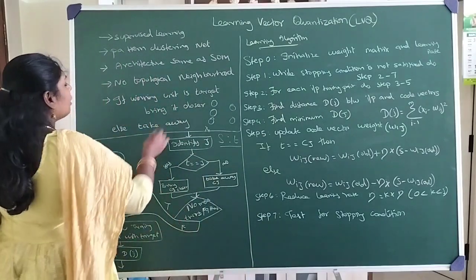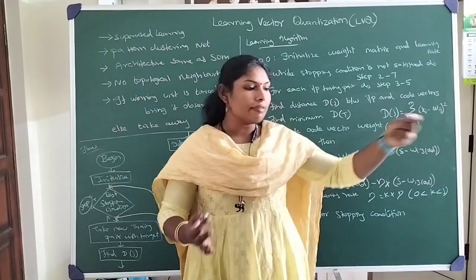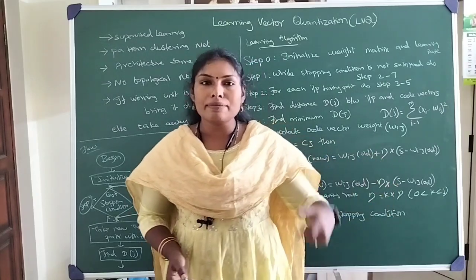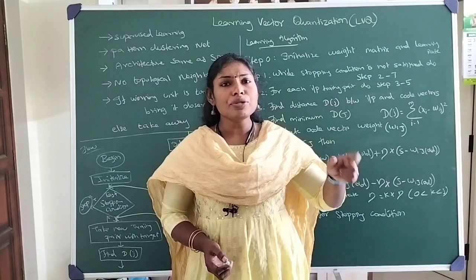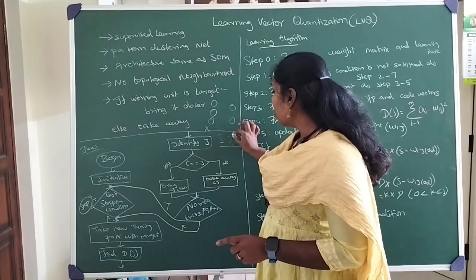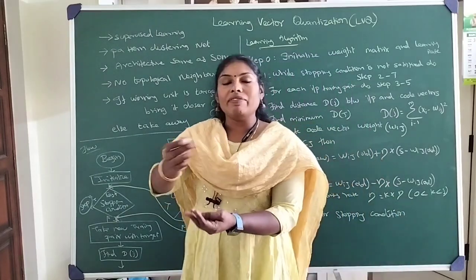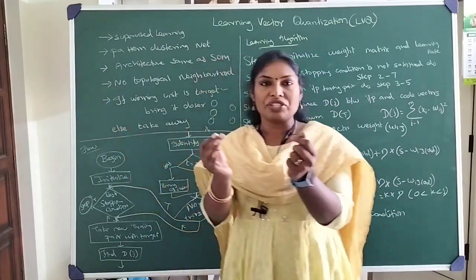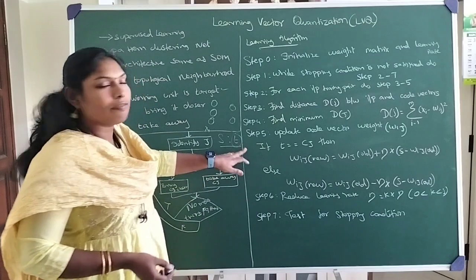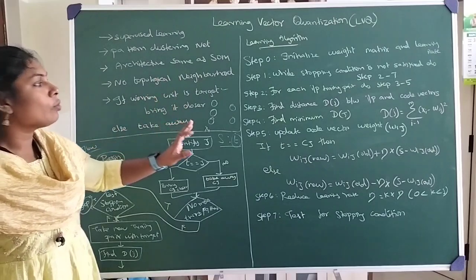Once we find the distance between the presented input pattern and the cluster units, we choose the minimum distance as the best one — that is the winning unit. After choosing the winning unit, we check if it matches the target. We present the input pattern, check which cluster it falls into, and if it is the same as the target, we enhance the weight — we bring those clusters closer. If the predicted output is not equal to the target value, then we move away. That is the policy of Learning Vector Quantization.